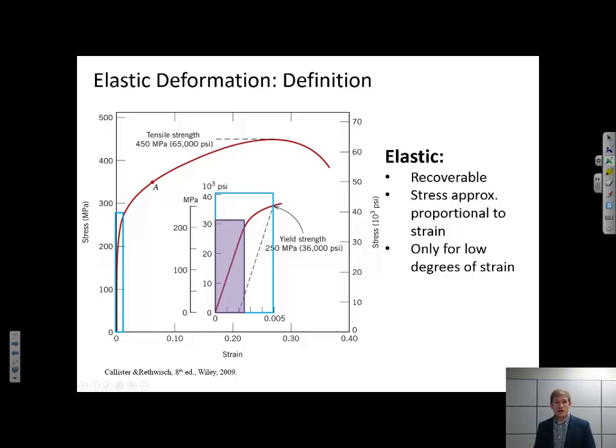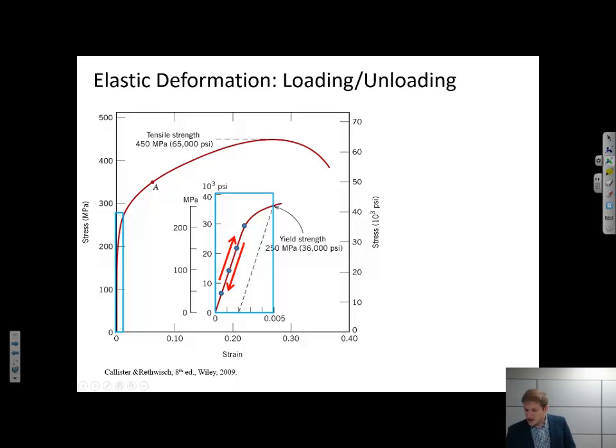Now you've already seen a stress-strain diagram, so you know that the elastic portion of the curve is typically linear, but more importantly, it's defined by the part with entirely recoverable strain. So if we apply some stress, maybe we're loading the material tensilely, the strain will increase. I'll follow the stress-strain curve up to some point. If I remove that stress, the strain is going to come back to zero. So the strain is entirely recoverable; there is no permanent deformation after loading the sample up to some arbitrary point.